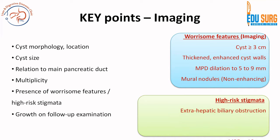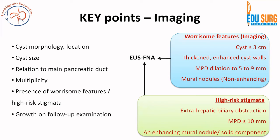When it comes to high-risk stigmata: obstructive jaundice, main pancreatic duct dilatation 10 mm or more, and an enhancing mural nodule or solid component. If a cyst has these high-risk features, the patient is going to need surgery. If there are worrisome features, then endoscopic ultrasound and cytology is recommended. Most guidelines for all patients with worrisome and high-risk stigmata suggest an endoscopic ultrasound with cyst fluid analysis and cytology if you have the resources and facility at your center.